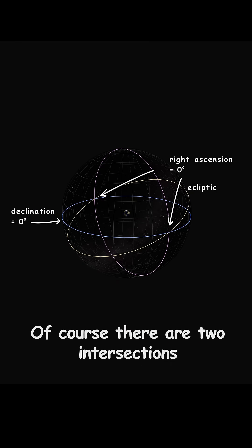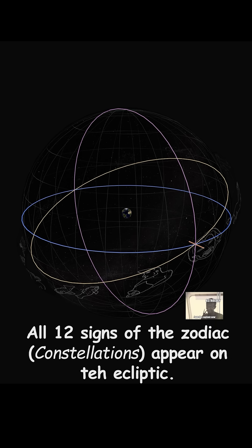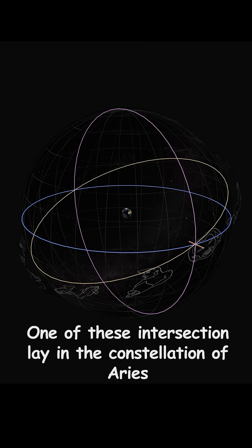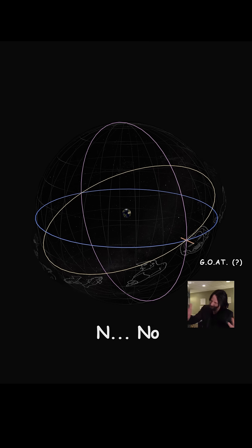Of course there are two intersections, but fun fact, all 12 signs of the zodiac appear on the ecliptic. One of these intersections lay in the constellation of Aries...no, Aries the Sheep.